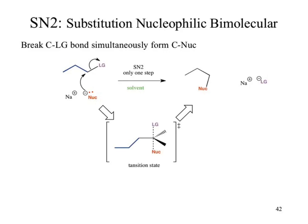If we look at the reaction all together, the nucleophile comes in and attacks. The reaction all happens in one step. So on an energy diagram, we'd start with a reactant, and the product should be lower in energy — a single-step diagram.